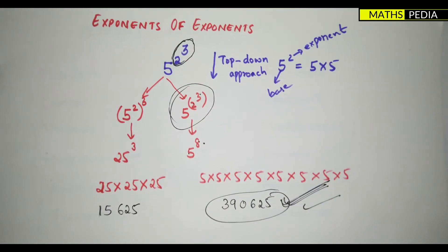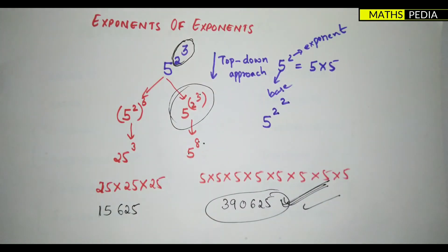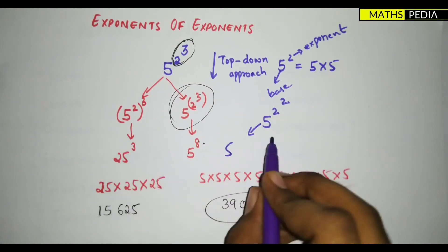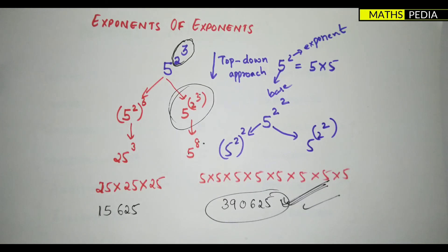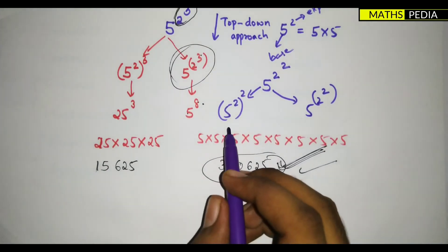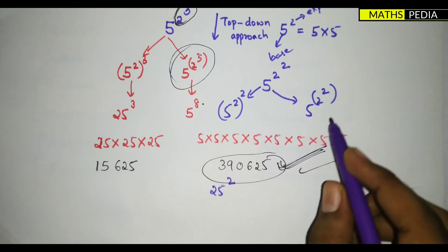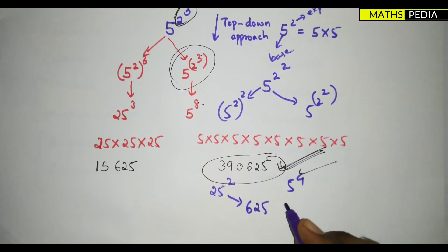Now one more interesting fact: suppose you have 5 to the power 2 to the power 2. If you go by both methods, you get the same answer. By the first method: 5 squared is 25, then 25 squared is 625. By the second method: 2 squared is 4, so 5 to the power 4 is also 625. Both give 625!